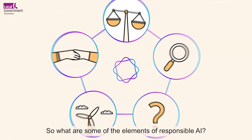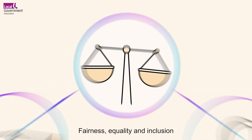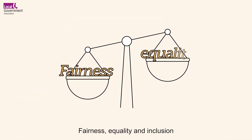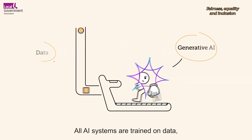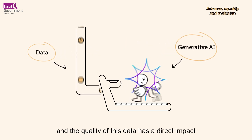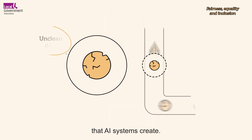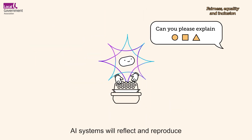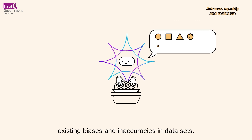What are some of the elements of Responsible AI? Fairness, equality and inclusion must be considered. All AI systems are trained on data, and the quality of this data has a direct impact on the quality of the outputs that AI systems create. AI systems will reflect and reproduce existing biases and inaccuracies in datasets.